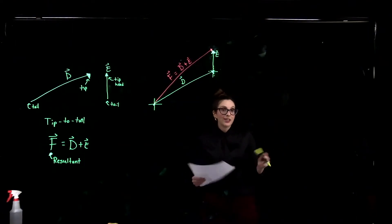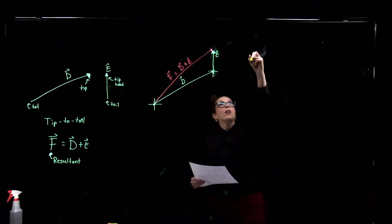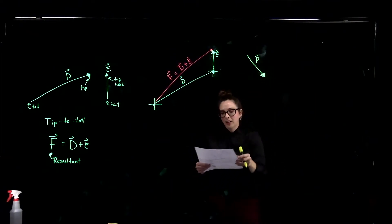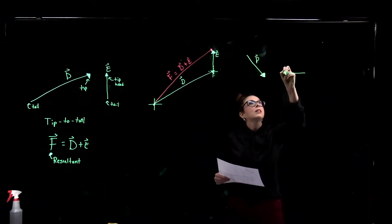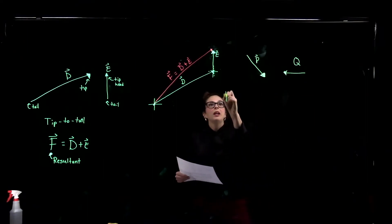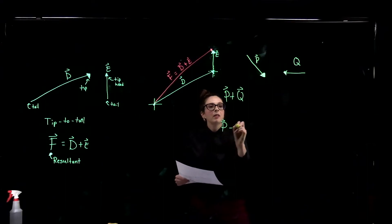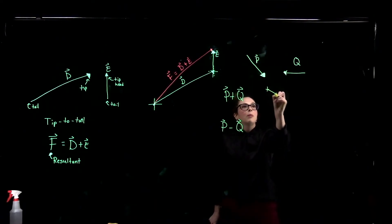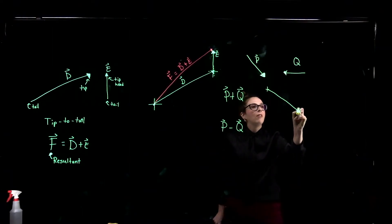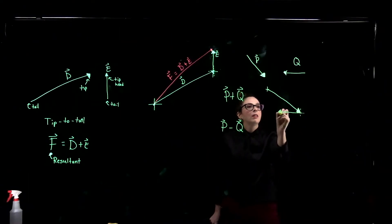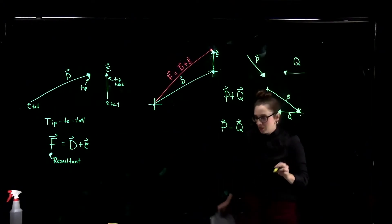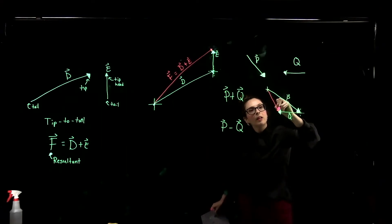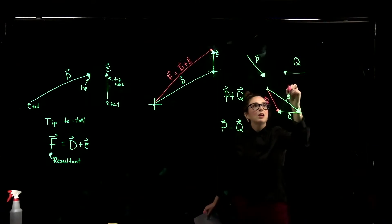What happens if we have two vectors and want to subtract instead of add? We have vector P pointing downward and vector Q pointing to the left. P plus Q would look like this: I draw P, then from the tip of P I draw vector Q going left. My resultant vector goes from the tail of the first to the tip of the second — that is P plus Q.